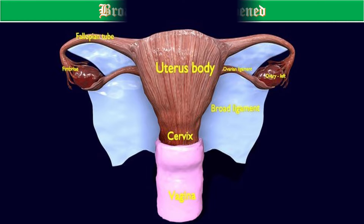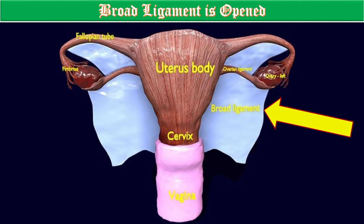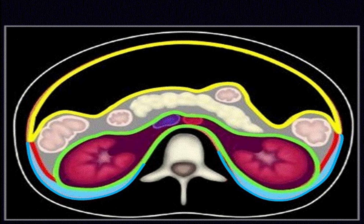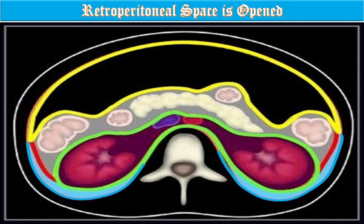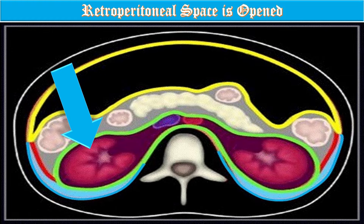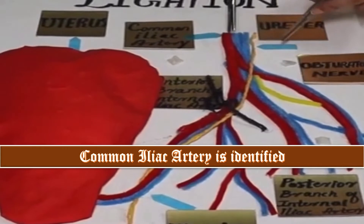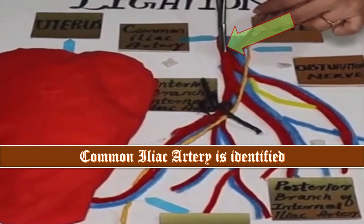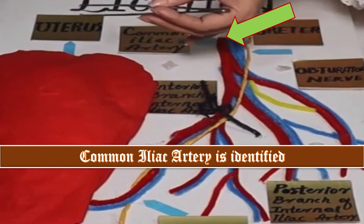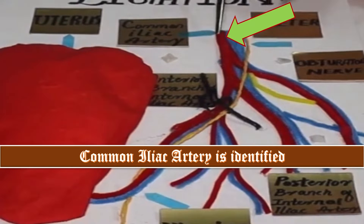The avascular posterior leaf of the broad ligament is further opened with sharp dissection. Using a moistened gauze on a sponge forcep, the retroperitoneal space is opened with gentle blunt dissection. The common iliac artery and its bifurcation may be visible; if not immediately visible, it can be located by palpation.